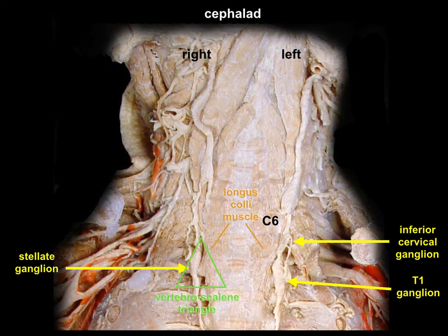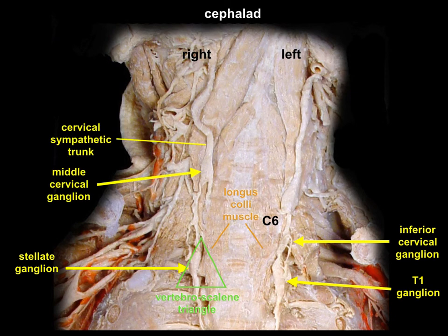This is why we go for the trunk itself or the middle cervical ganglion. Being at the right layer means underneath the deep cervical fascia, and the local spread will go downwards inferiorly to the stellate ganglion.